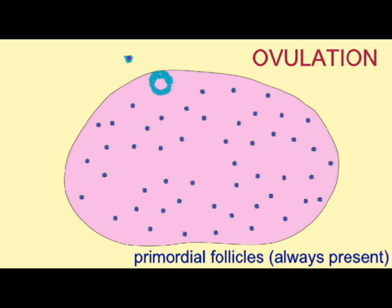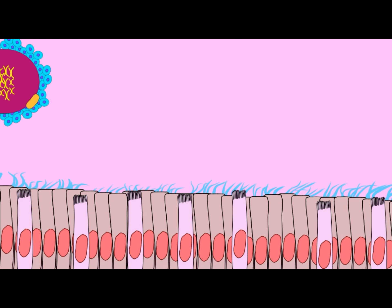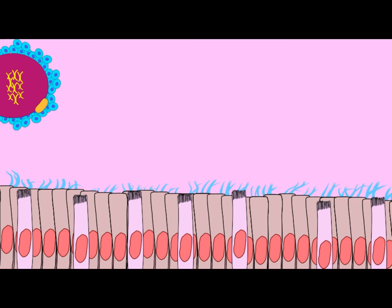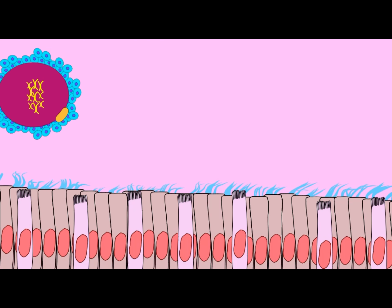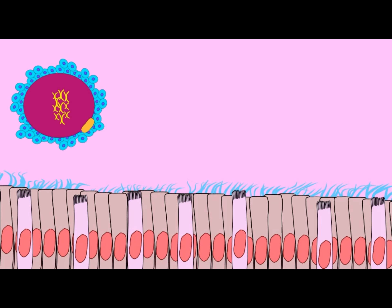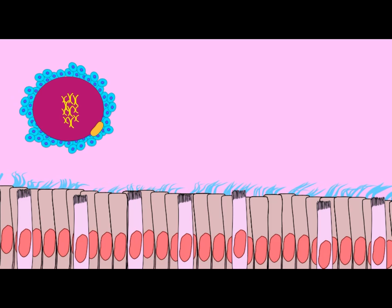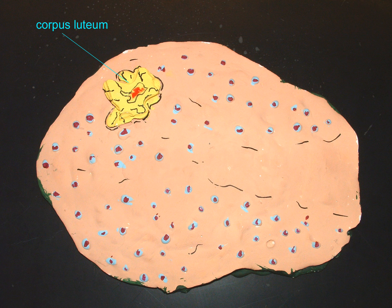This pressure will burst the contents of the follicle through a hole which develops because of this digestion. The secondary oocyte and the surrounding cumulus granulosa cells, known as the corona radiata, are released from the vesicular follicle. The oocyte will then be taken up by the oviduct, and the remaining follicular cells will become the corpus luteum.